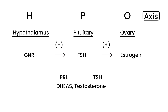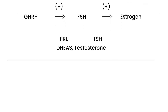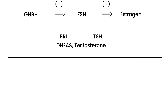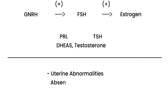Hormones are definitely part of amenorrhea, but there's a second big part: uterine structural abnormalities. Remember, the uterus is where menses occurs. So if there's some sort of abnormality — like if the uterus is absent or if the uterus has an obstruction to flow — that can also cause amenorrhea.